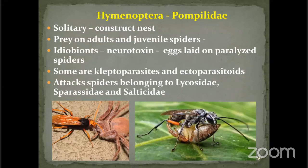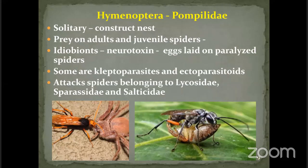Starting with the predators, the well-known example is Pompilidae — the adults are solitary, construct their own nests, and prey on adult and juvenile spiders. They are idiobionts — no further development of the spider occurs after venom injection. The Pompilidae wasp takes the spider to its nest where it lays eggs on the spider, and wasp larvae develop by consuming the spider. Some Pompilids are also kleptoparasitic, developing in the nests of other Pompilidae as ectoparasitoids. They attack spiders belonging to Lycosidae, Sparassidae, and Salticidae.